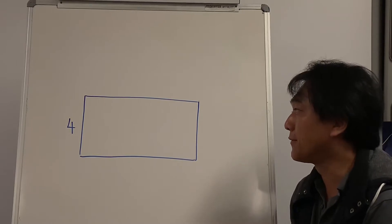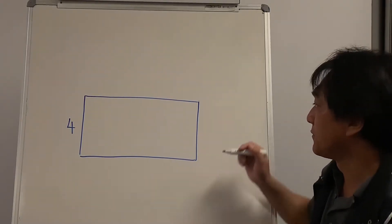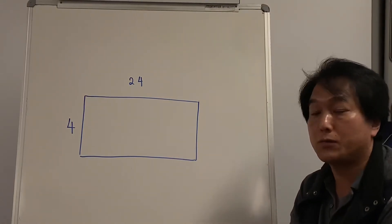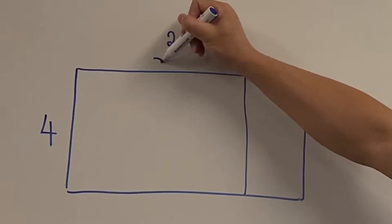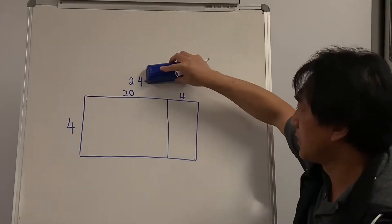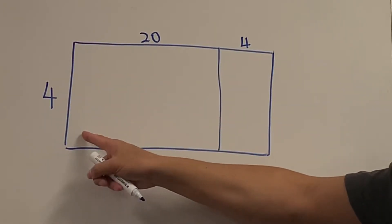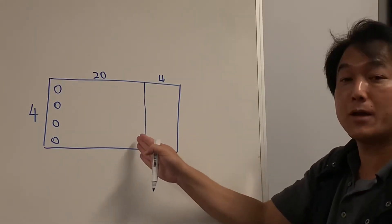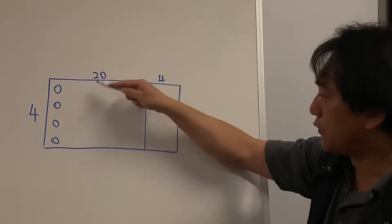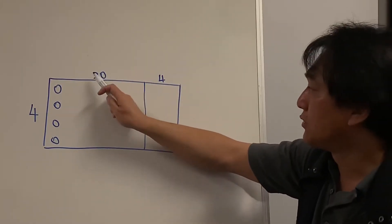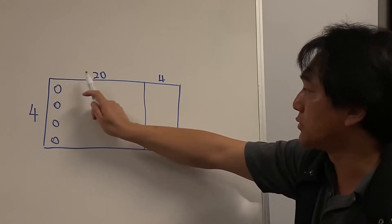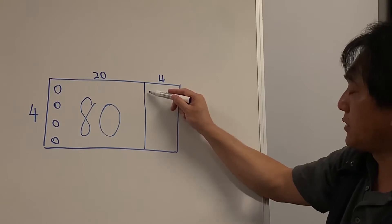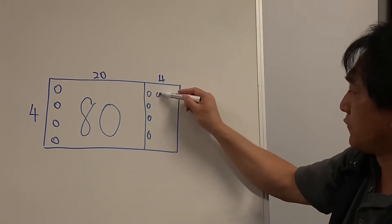You may have watched the multiplication video with the area model, so let's do 4 times 24. This part is 20 and this part is 4. Imagine there are 4 rows of cupcakes and 20 columns of those cupcakes — so 4, 4, 4... 20 lots. So 20 lots of 4: 4 times 20 is 80, so there are 80 cupcakes here.